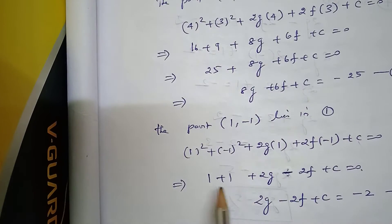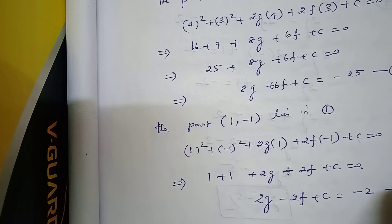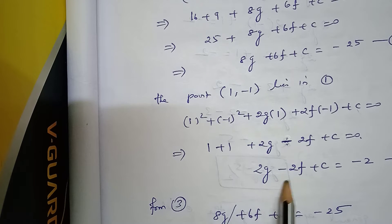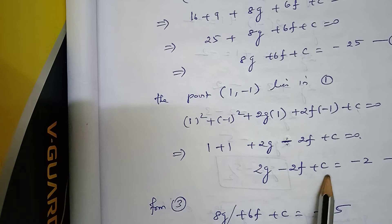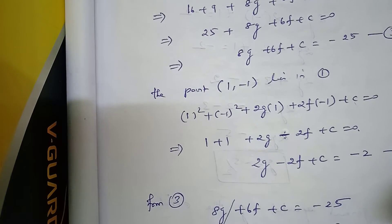For the third point (1, -1), in a similar manner, substituting gives 2g - 2f + c = -2, which is equation number 4.